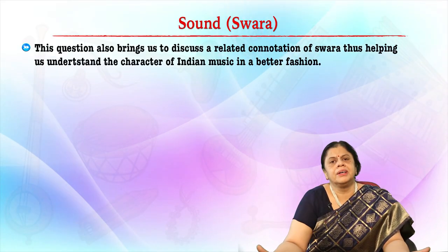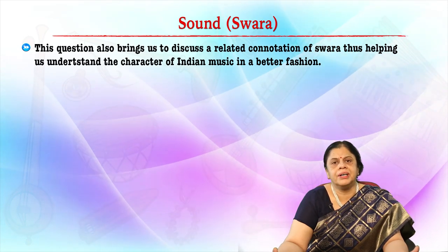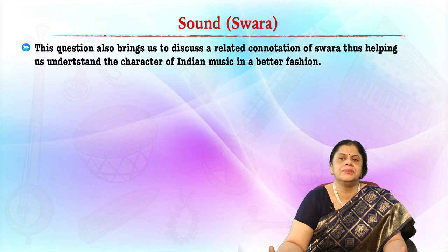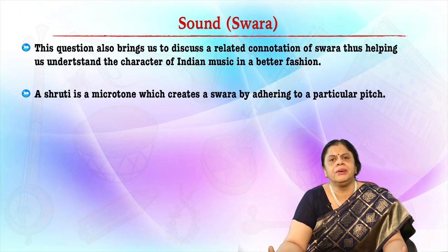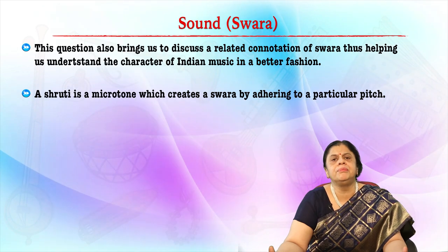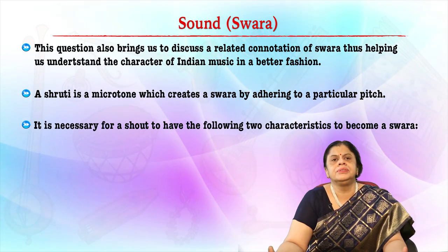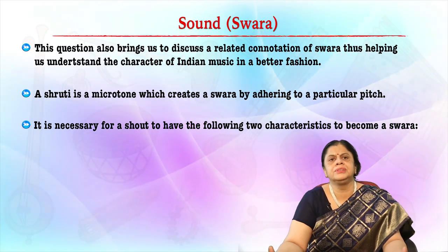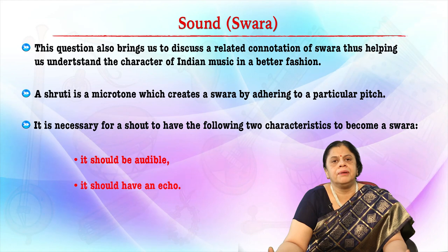Now, how are swaras created? A shruti is a micro-tone which creates a swara by adhering to a particular pitch. For a shruti to become a swara, it must have two characteristics: first, it should be audible, and second, it should have an echo. There are countless shrutis in the Indian musical system, but a maximum of only 22 are used in any saptak, that is, in any particular spectrum of swaras.